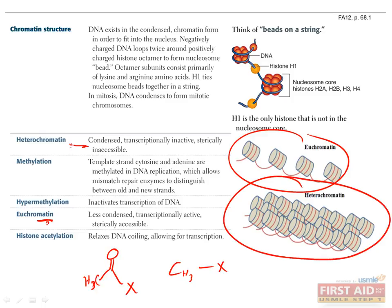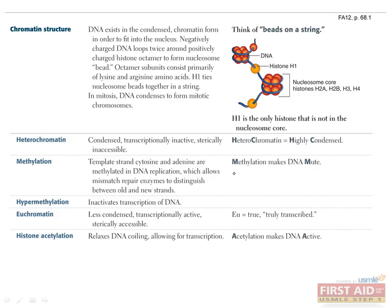I usually remember this difference between acetyl groups and methyl groups by thinking that acetyl groups are bigger and therefore push DNA away from histones, whereas methyl groups are smaller and allow them to stay close together. You can also use the mnemonic shown here, which is that methylation makes DNA mute, and acetylation makes DNA active.